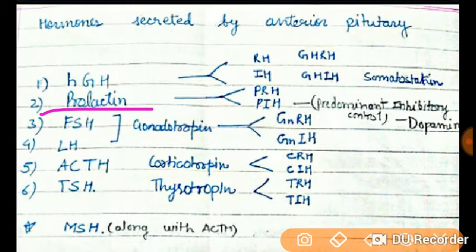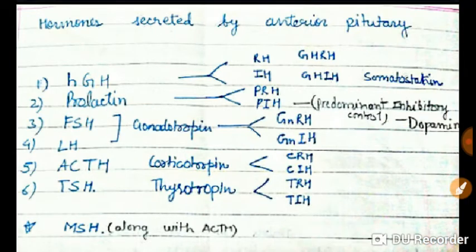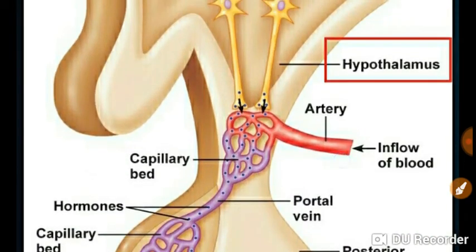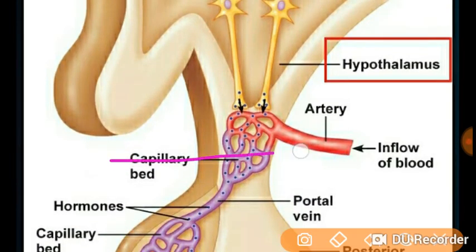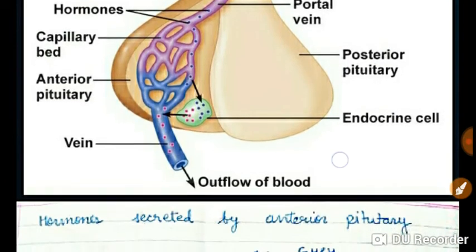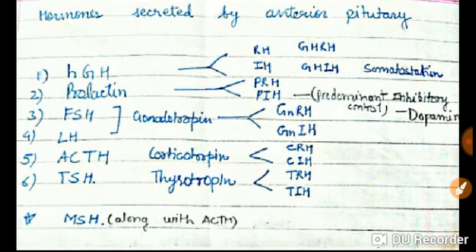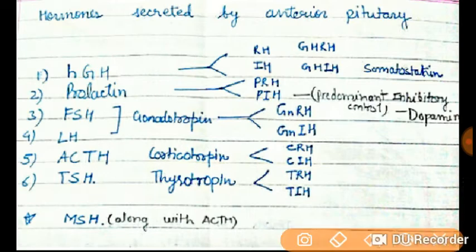The next hormone is prolactin. This is a very important point: prolactin is the only hormone that is under inhibitory control. A common exam question is: when the pituitary gland is cut, which hormone's level goes up? The answer is prolactin.